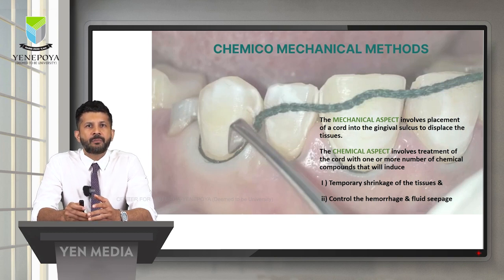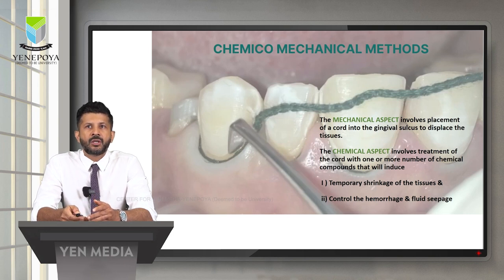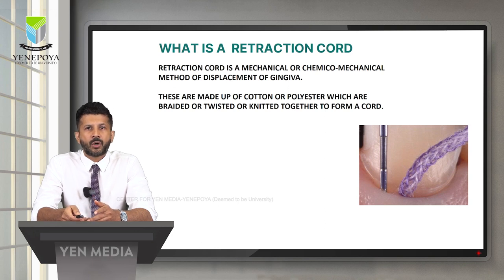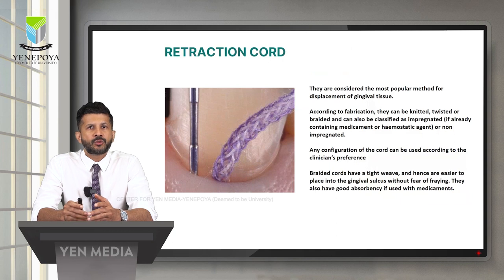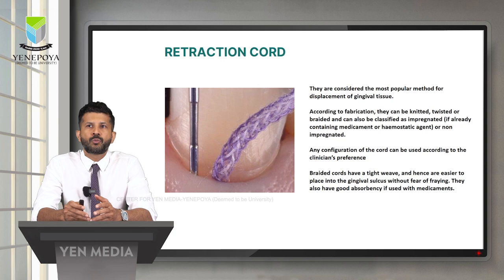In chemico-mechanical methods, the mechanical aspect involves placement of a cord into the gingival sulcus to displace the tissues, while the chemical aspect involves treatment of the cord with chemical compounds that induce temporary shrinkage of the tissues and control of hemorrhage and fluid seepage. Retraction cord is a mechanical or chemical method of displacing the gingiva, made of cotton or polyester which are braided, twisted, or knitted to form a cord. They are considered the most popular method for displacement of gingival tissues, and can be classified as impregnated or non-impregnated. Braided cords are most preferred as they hold more moisture due to their configuration.